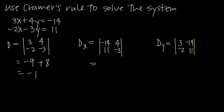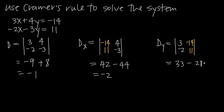Now I just need to solve these. For D sub x: negative 14 times 3 gives us positive 42, and we subtract 11 times 4, which is 44, so we end up with negative 2. For D sub y: 3 times 11 is 33, minus negative 2 times negative 14, which is positive 28. So we have 33 minus 28, which gives us positive 5.